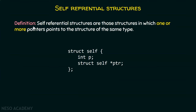The definition of self-referential structure is very simple. Self-referential structures are those structures in which one or more pointers point to the structure of the same type. Here is an example: struct self is a structure which consists of two members — an integer variable p, and a struct self star ptr. This pointer points to struct self itself, which is why it is called a self-referential structure.